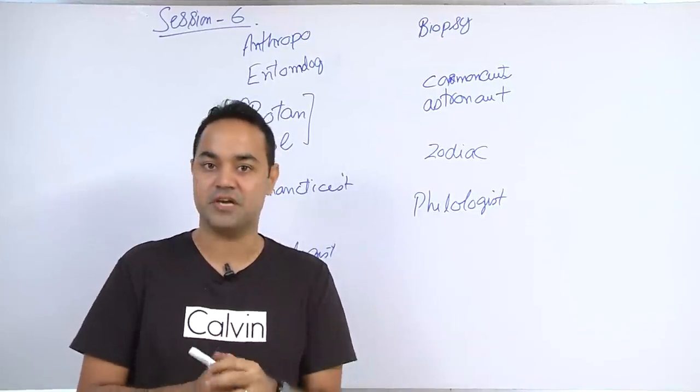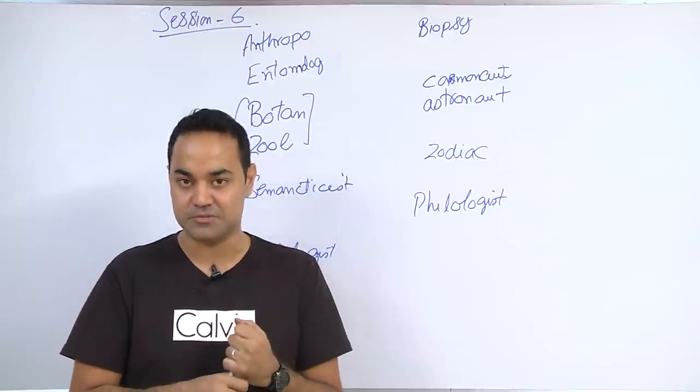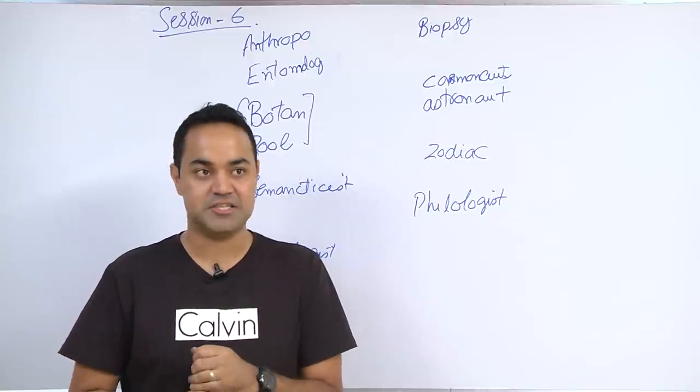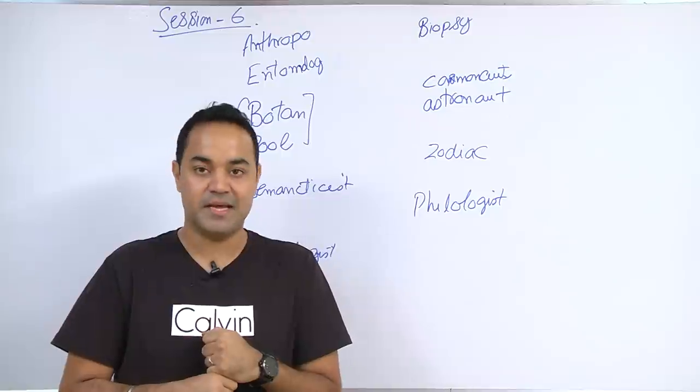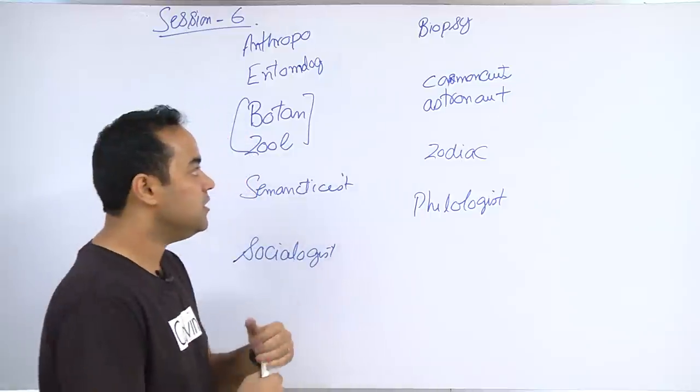Like CAT, SNAP, GRE, GMAT, and all the banking exams. When I talk about science, science could be anything related to animals, mammals, it could be as bad or as good as astronauts or cosmonauts.